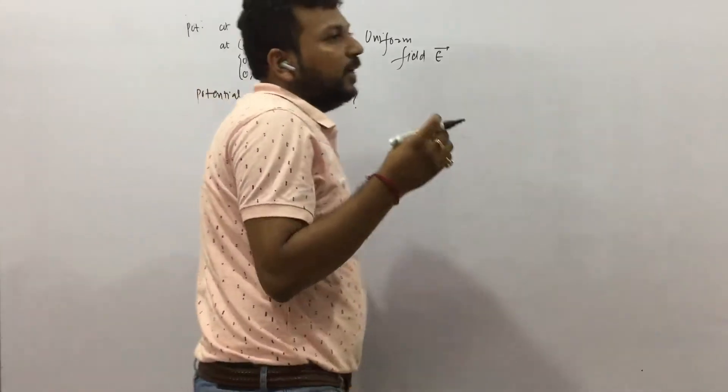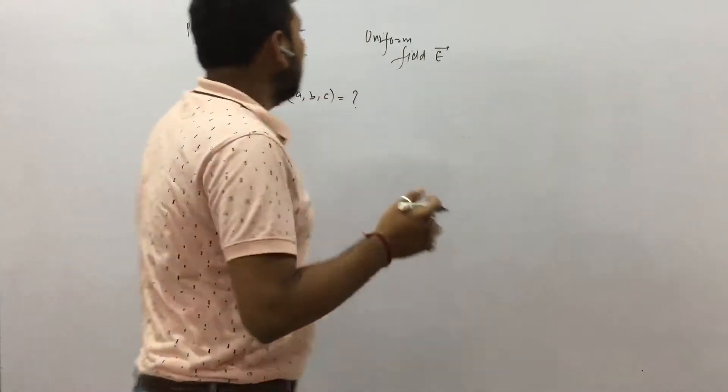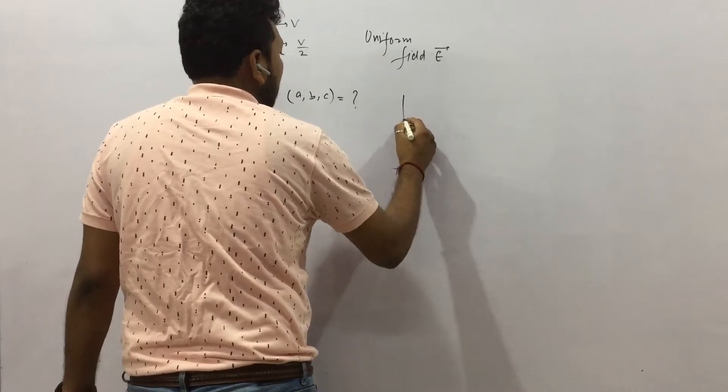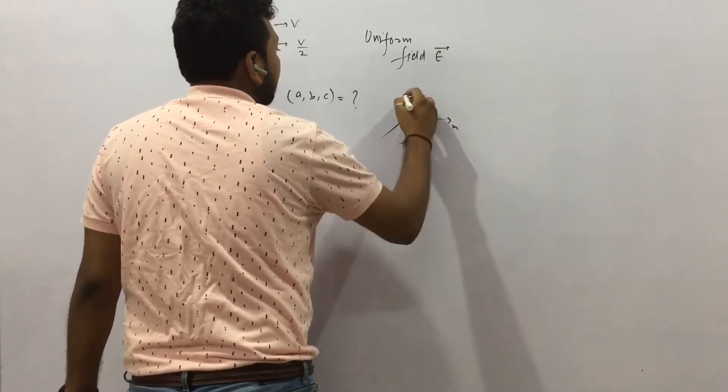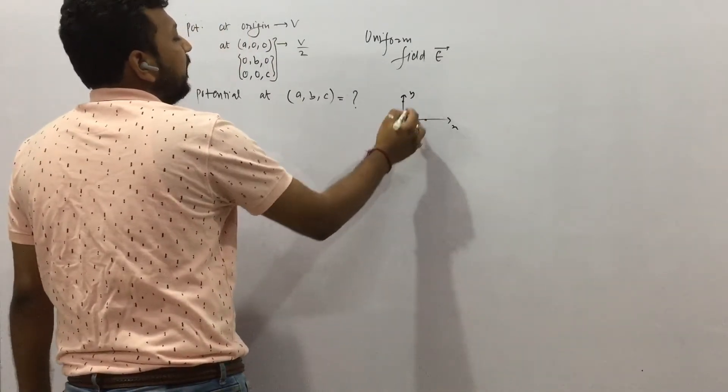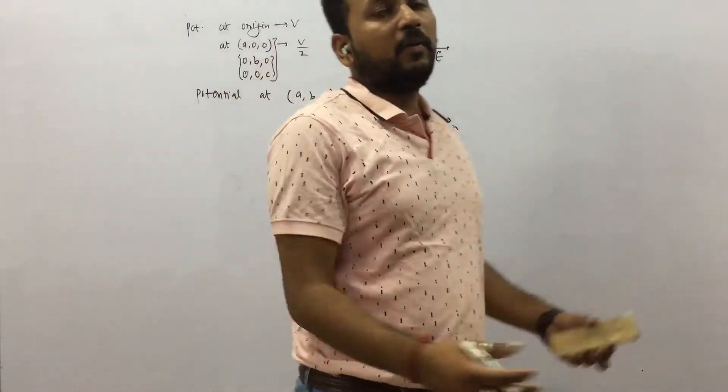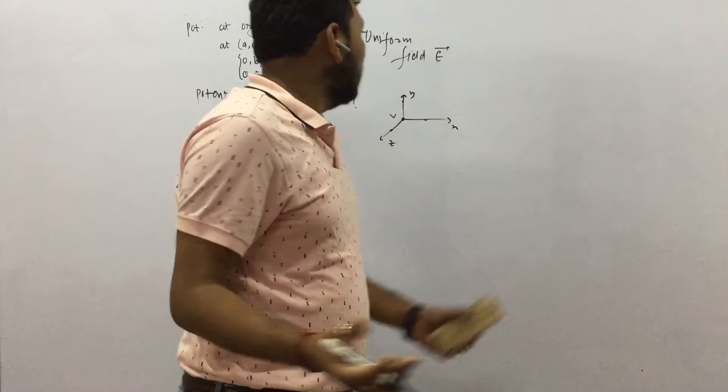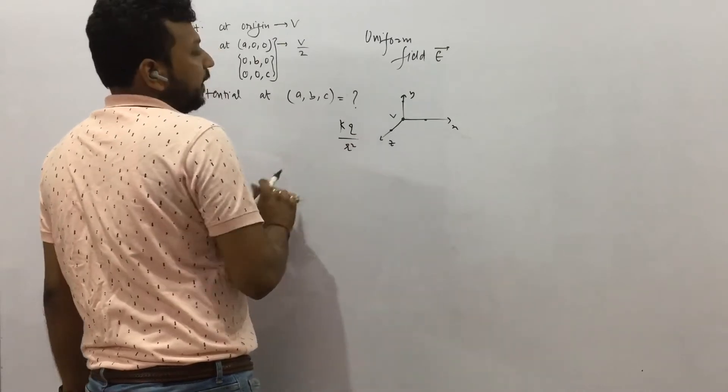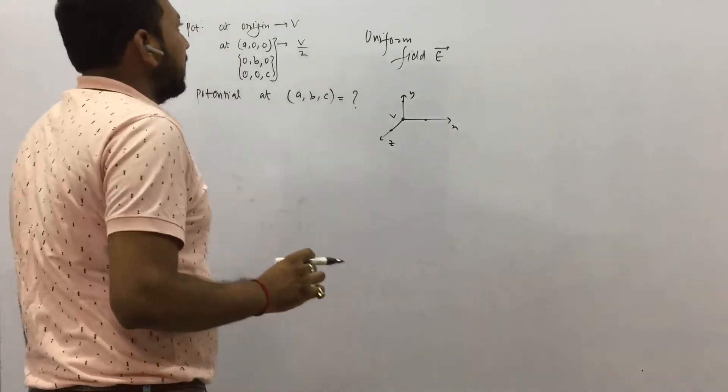So first of all understand the field is uniform. It is not saying the field is radial or something. It is uniform. And at origin, you know the potential. Right? It is V. And at A, B and C, you know the potential. So for such a thing, you first need to find some expression for electric field. If it would have been radial, we would have considered kQ by R square or something like this but not here. Okay? So it won't satisfy here.